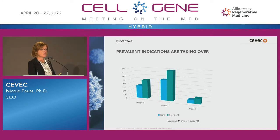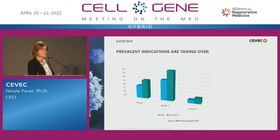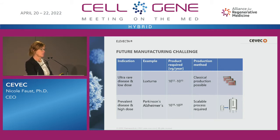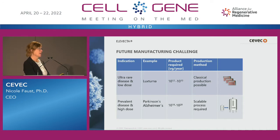Even in phase three, there are more clinical trials for prevalent diseases than for rare diseases. While this is really good news for the field, it also means that manufacturing challenges are increasing, because with prevalent diseases you're going to have much higher patient numbers and need much bigger production batches. For ultra-rare ophthalmic indications like Luxturna, you need about 10^12 to 10^13 viral genomes per year, which classical production methods can handle.